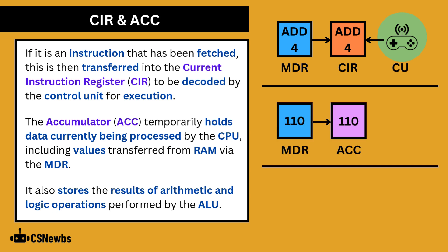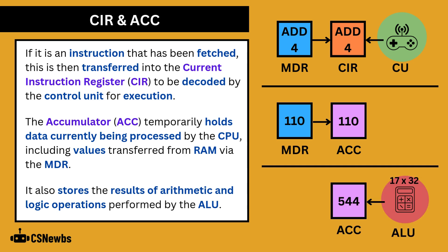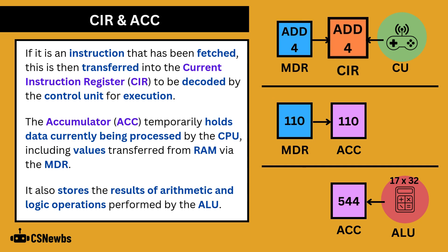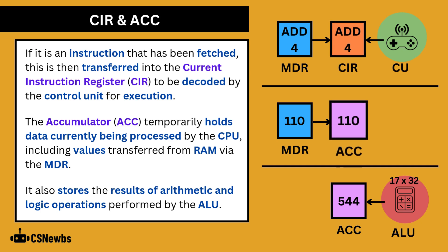The fifth and final register is the accumulator, which temporarily holds data currently being processed by the CPU, including values transferred from RAM via the MDR. It also stores the results of arithmetic and logic operations performed by the ALU. You can think of the MDR like a holding place for values from RAM — if it's an instruction it will go to the CIR, and if it's data the CPU currently needs it will go to the accumulator.